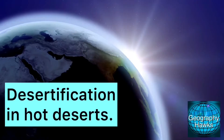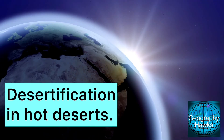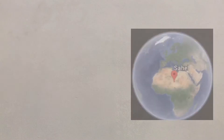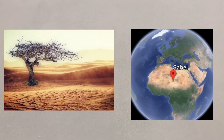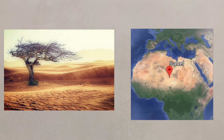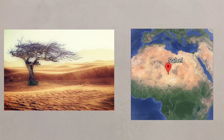Desertification is where land is slowly turned to desert. This is often found at the fringes of deserts and there are a number of reasons why this happens. Desertification is most prevalent at the fringes of hot deserts, such as the Sahel on the southern fringe of the Sahara.